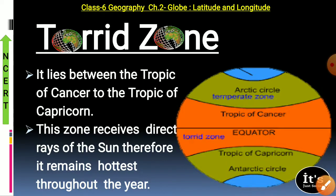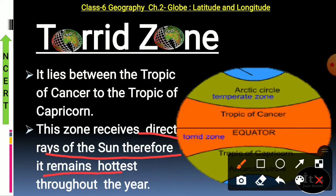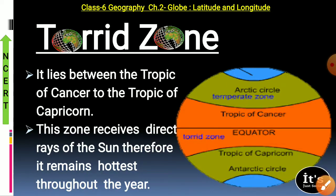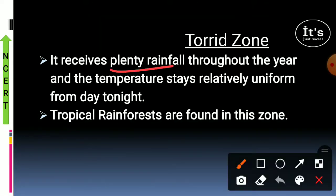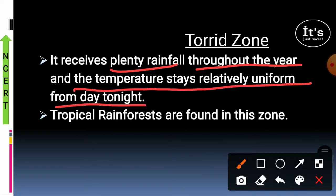This zone receives direct rays of the sun, therefore it remains the hottest throughout the year. The torrid zone also receives plenty of rainfall throughout the year and the temperature stays relatively uniform from day to night. Africa is divided by the equator into two equal halves, so Africa is very warm, and the world's largest desert, the Sahara, is in Africa.